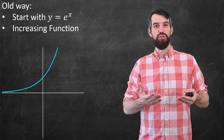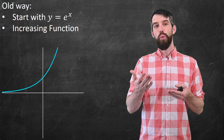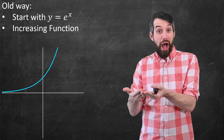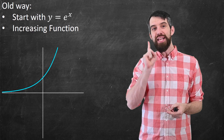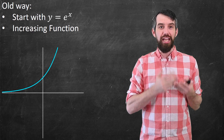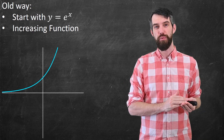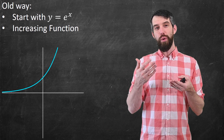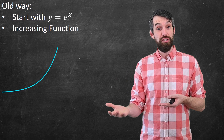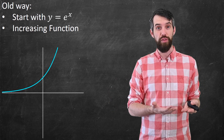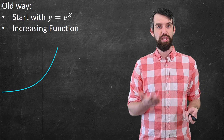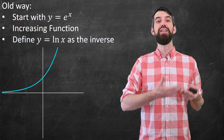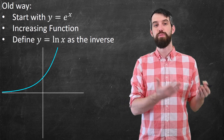It gets bigger as you go to the right. What that means is that for any output, any y value, there is exactly one corresponding input, corresponding x value. That is, this is a so-called one-to-one function. And what is nice about one-to-one functions is that you can invert them, and indeed, that's what the logarithm was.